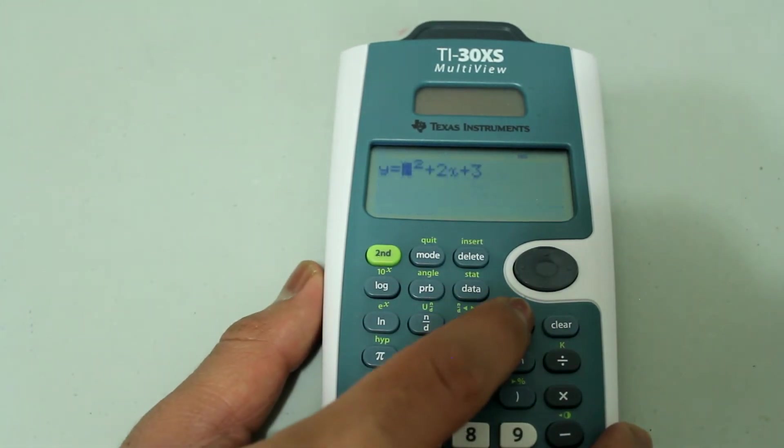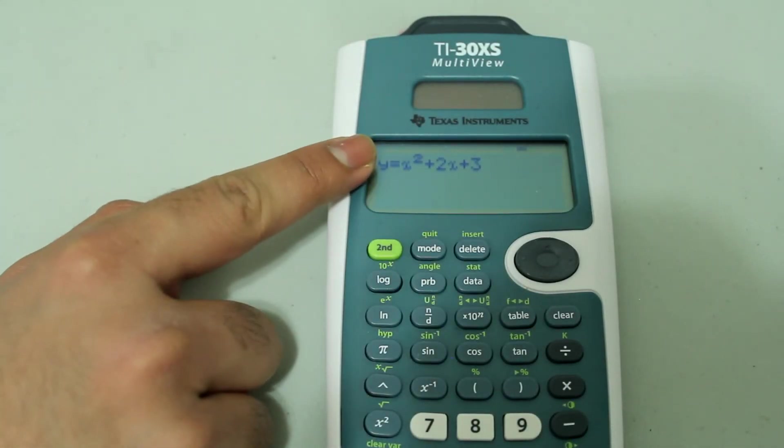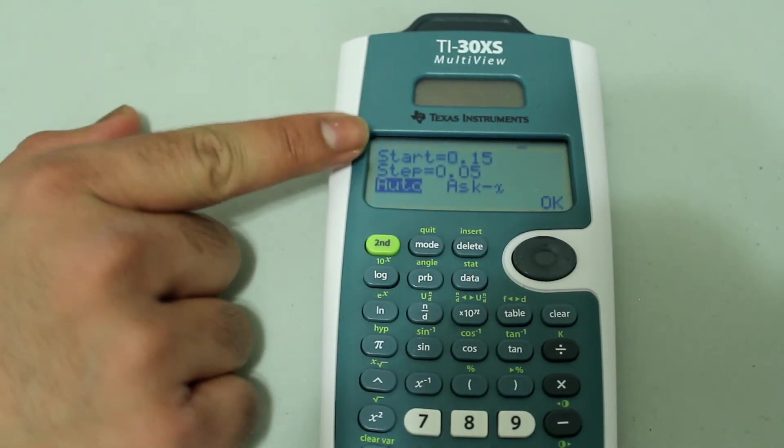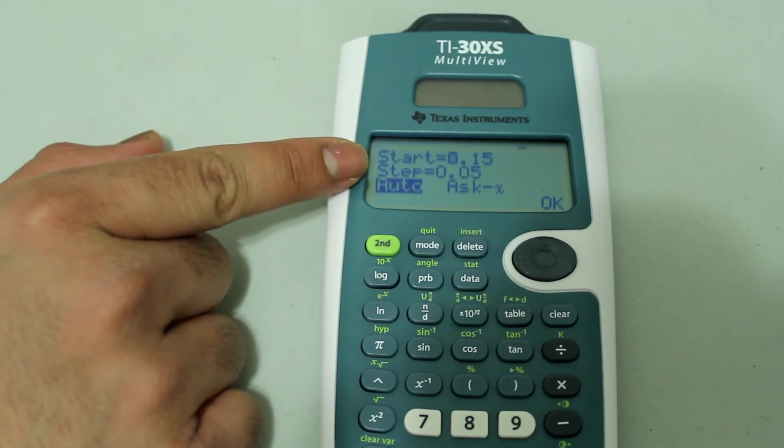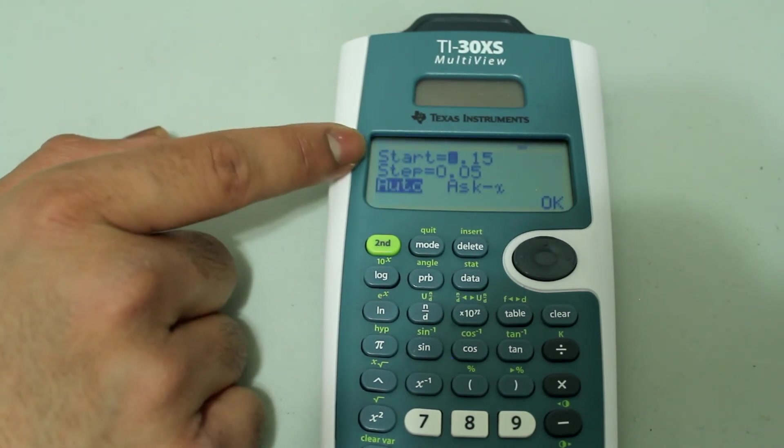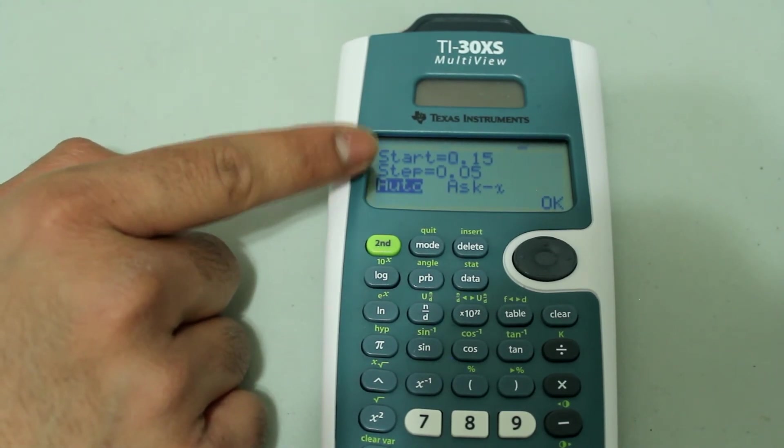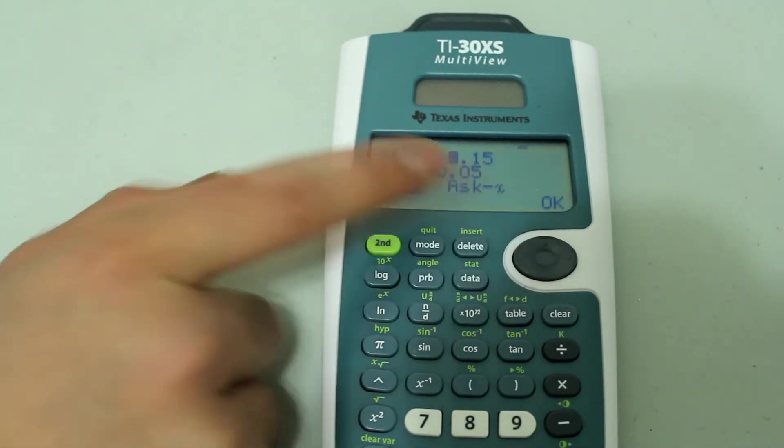I can go back and change the table set any time. If you press table, it will take you to this screen. Just press enter, and now you can change the start, the step, and any other feature you want. The start changed because I arrowed down on the table.